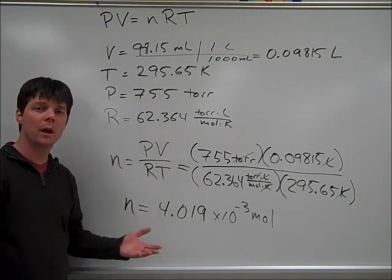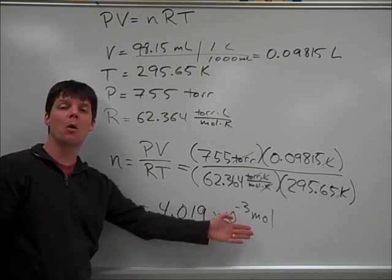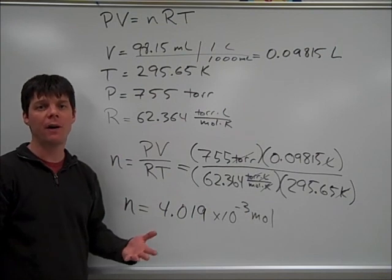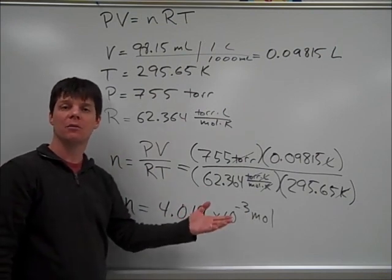After calculating for the number of moles, we find an answer of 4.019 times 10 to the minus 3 moles. I'm not quite done yet. At this point, what I need to do in order to find my final answer will be to convert from moles to number of molecules.